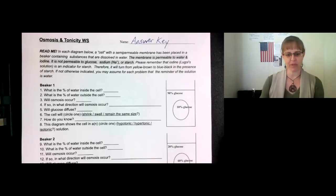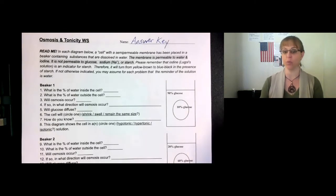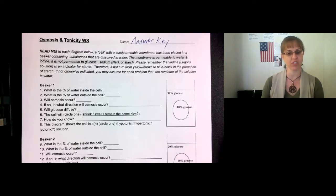In each diagram below, a cell with a semi-permeable membrane has been placed in a beaker containing substances dissolved in water. The membrane is permeable to water and iodine. It is not permeable to glucose, sodium, or starch. So water and iodine can get through the cell membrane, but glucose, sodium, and starch cannot.